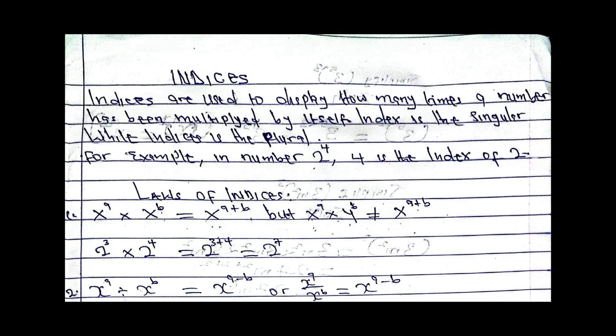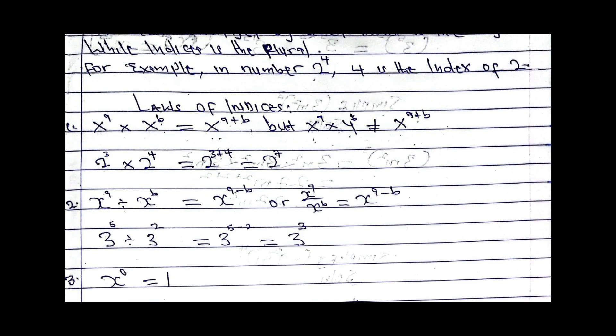Now, what are the laws that govern indices? There are about eight to nine laws, but here I bring the most important seven. Law number one — you can also call it the multiplication law. Suppose we have x power a times x power b; our answer will be x power a plus b. Since the variables are the same, we can simply add the powers.